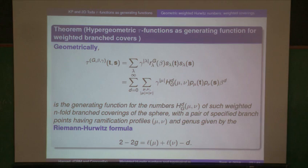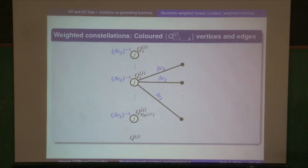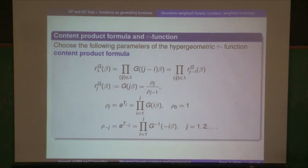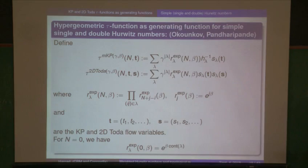Define the series with a double diagonal Schur function and a content product coefficient, and for free you've got a tau function — because the rules tell you that. It's clear when you write down the fermionic representation why this is a 2D Toda tau function at the n equals zero point.